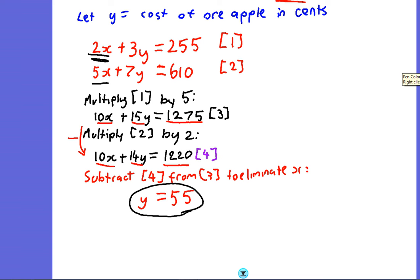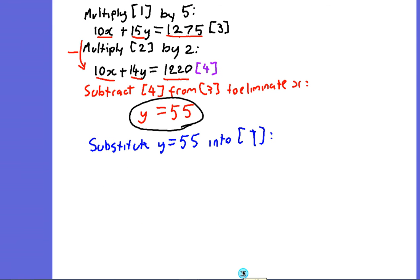So now we have to substitute the value that we got for y into one of the equations. It shouldn't matter which one—let's choose equation 1. I suppose you could use 3 or 4 if you wanted, but we'll choose good old equation 1 because it has smaller coefficients, smaller numbers multiplying the x's and y's. So here we get 2x + 165—you can write that on a calculator—is equal to 255.